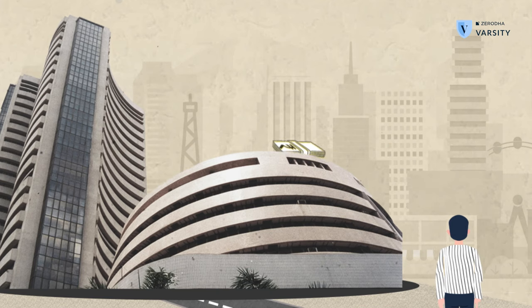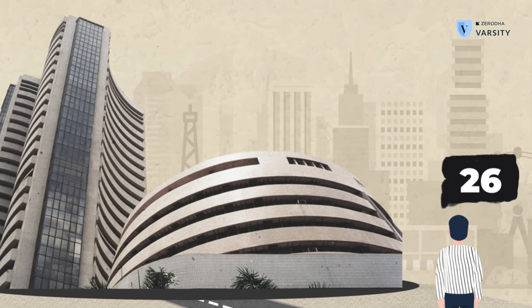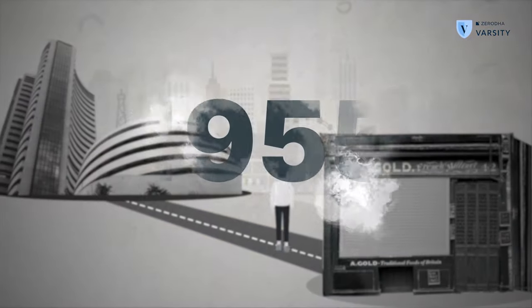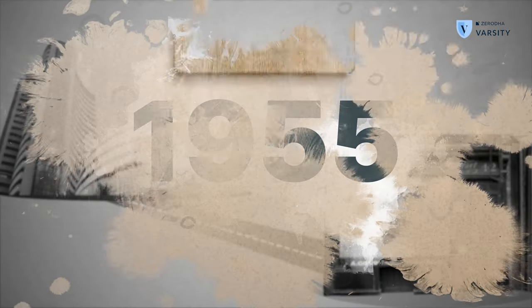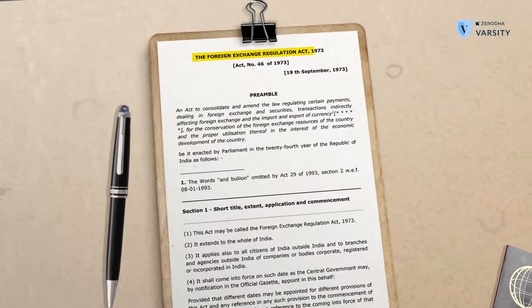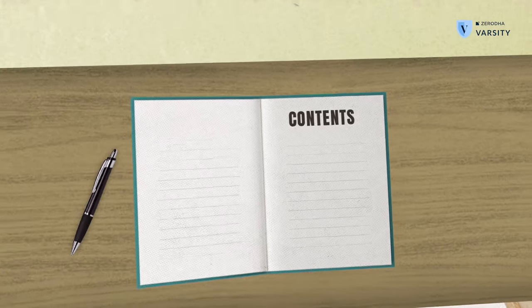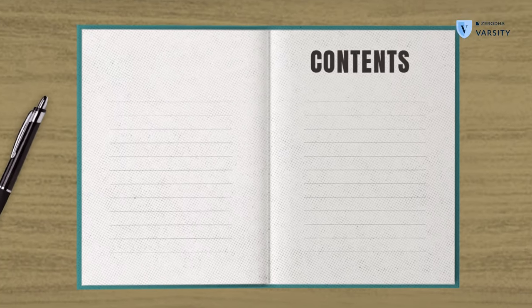Mr. Sampath started investing in Indian markets at the age of 26 after quitting his family business in 1955. After the establishment of the Foreign Exchange Regulation Act in the 1970s, he made his fortune by holding on to these multinational multi-baggers like Hindustan Unilever, Procter & Gamble, Gillette, Nestle, and even Colgate.